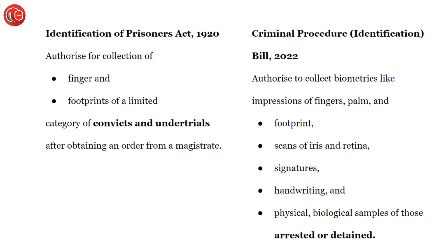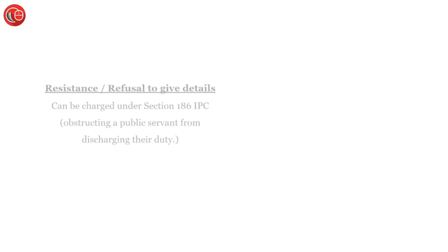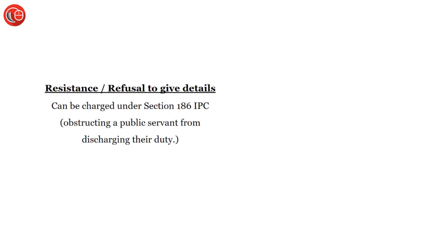The new Criminal Procedure Identification Bill 2022 will authorize the collection of biometrics including finger and palm print impressions, footprint impressions, iris and retina scans, signatures, handwriting, and physical and biological samples — all from persons who are arrested or detained.